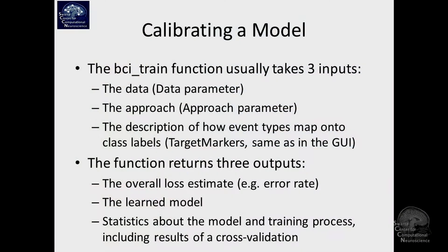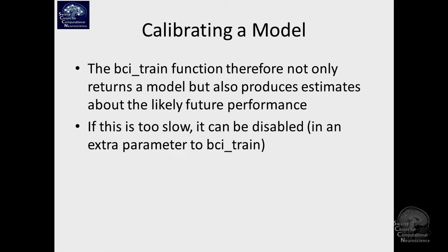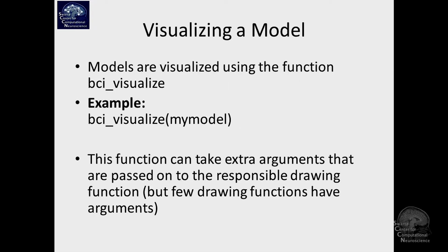So this is just a summary of what the function here takes. So it has these three inputs: data, approach, and the marker specification. It has three outputs. The first one is the overall loss estimate for whatever loss metric you use. If you use misclassification rate, it would be the misclassification rate and so on. Next one is the model structure. And the third one is any statistics that it happened to cough up about how well the model is probably going to work. It's going to be things like standard deviation of the misclassification rate over all folds of the cross validation. You can turn that off if that's somehow running for too long.